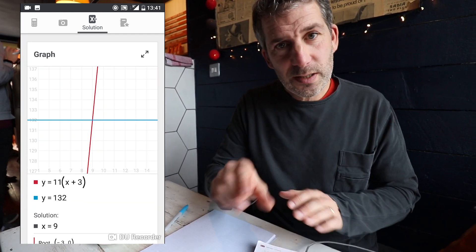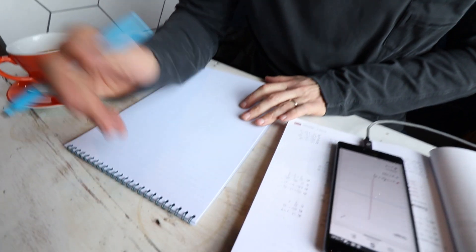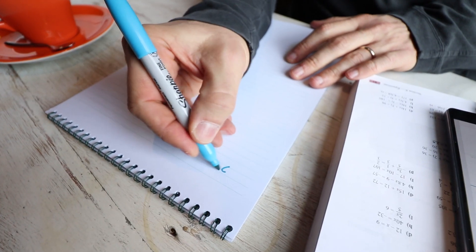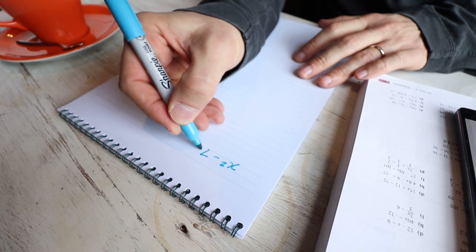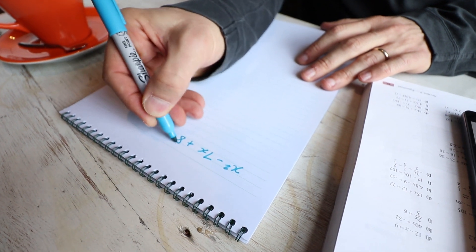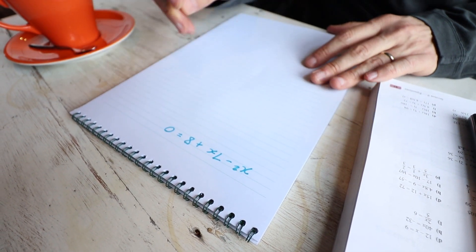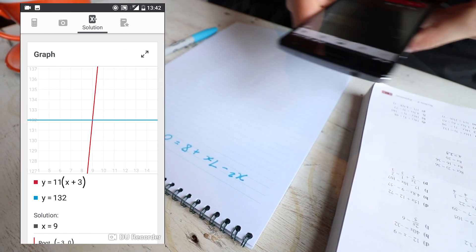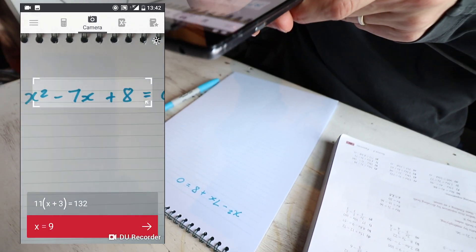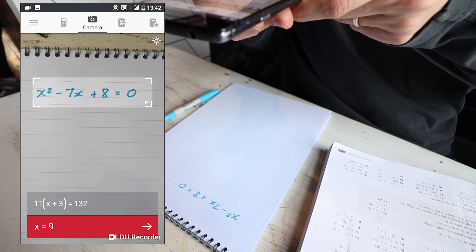But it's even cleverer than that, because it can read your handwriting, so you can write down an equation, and it will solve it. So let's do a slightly harder equation as well. Let's do x squared minus 7x plus 8 is equal to 0. So we've read, and I've not got the best handwriting. Oh, I think that looks quite neat, actually. See if it can recognize that.